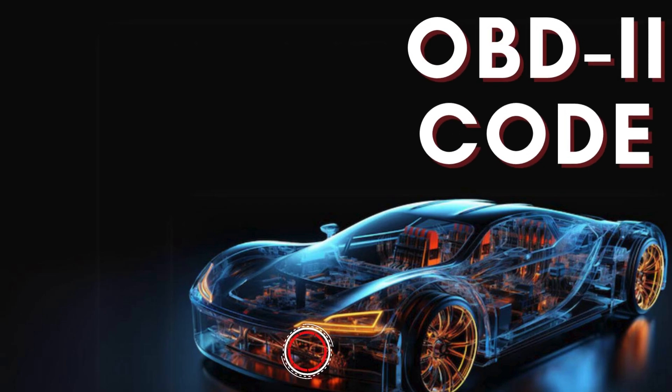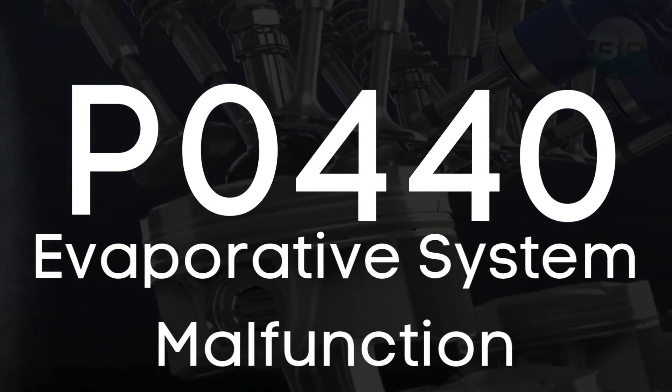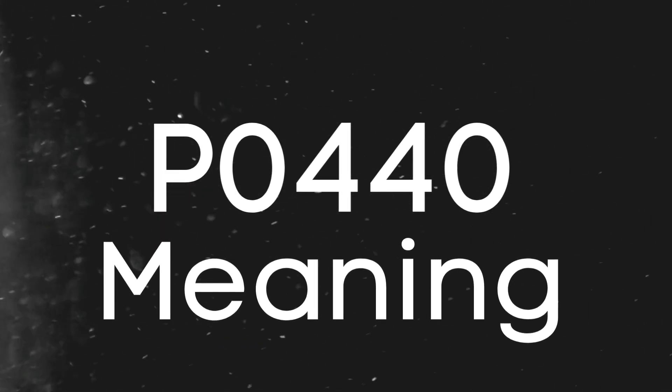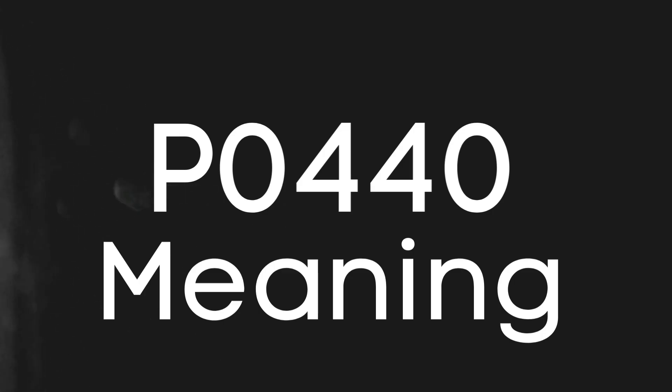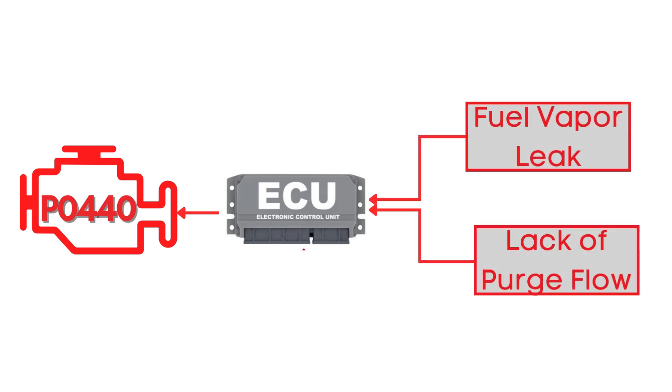Hey there! In this video, we're diving into everything you need to know about OBD-II Trouble Code P0440, also known as EVAP system malfunction. First things first, let's break down what the P0440 code actually is. This code gets triggered when the ECU detects a condition in the EVAP control system that indicates a fuel vapor leak, or a lack of purge flow in the system.